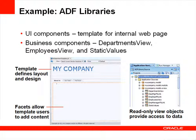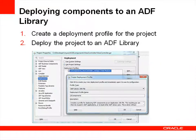The UI components library contains a page template that will be used by each department in a company to create an internal web page for the department. The template defines the look and feel of the page. It includes areas known as facets where page designers can add content. The business components library includes read-only view objects for querying the departments and employees table, plus a view object based on a static list of values — in this case, a list of languages.